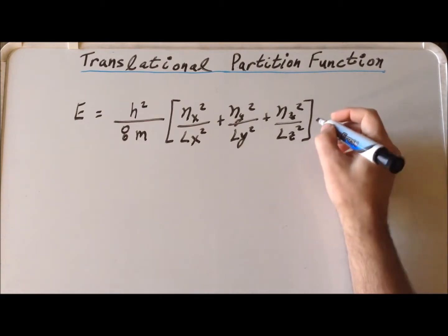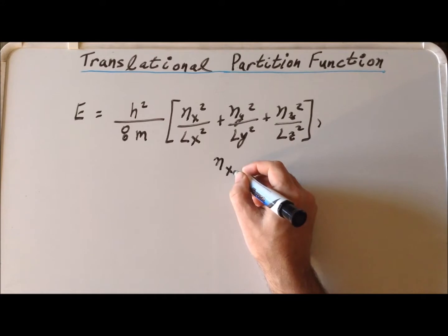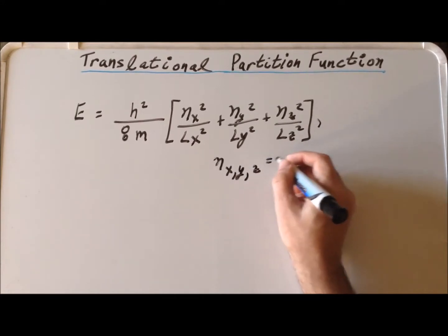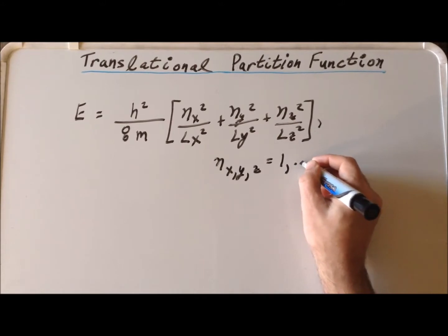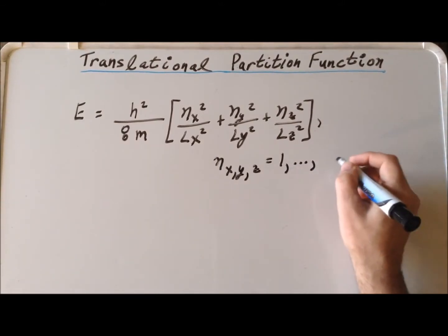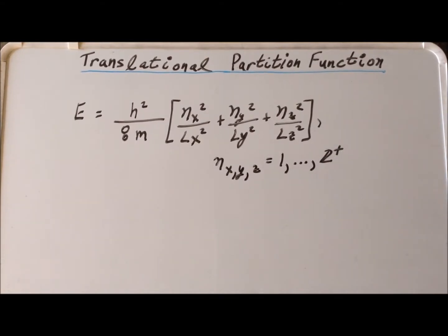As a subtle point, the various quantum numbers n_x, n_y, or n_z go from one through the positive integers. An important subtle point here is that n's can never be equal to zero. The lowest energy state for translation would be n_x, n_y, n_z equal to one.